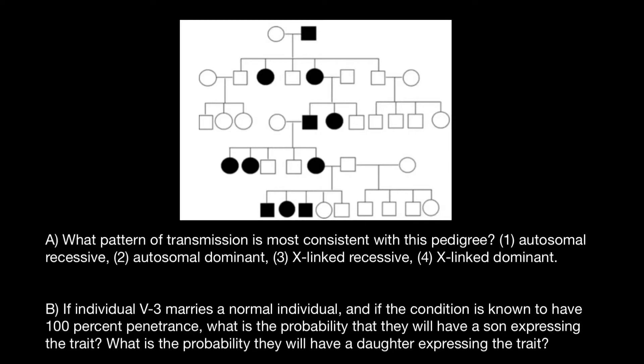Hello, and welcome to Nikolai's genetics lessons. Today's problem is: what pattern of transmission is most consistent with the pedigree? We propose four variants: autosomal recessive, autosomal dominant, X-linked recessive, and X-linked dominant.